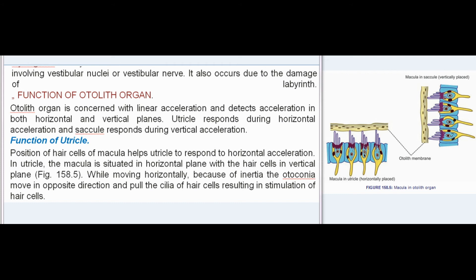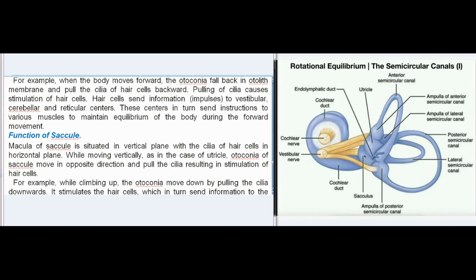Function of the otolith organ: the otolith organ is concerned with linear acceleration and detects acceleration in both horizontal and vertical planes. In the utricle, the macula is situated in the horizontal plane with hair cells in the vertical direction. While moving horizontally, due to inertia, the otoconia move in the opposite direction and pull the cilia of the hair cells, stimulating them. For example, when the body moves forward, the otoconia fall back, pulling the cilia backward. Hair cells then send impulses to vestibular, cerebellar, and reticular centers, which instruct muscles to maintain equilibrium.